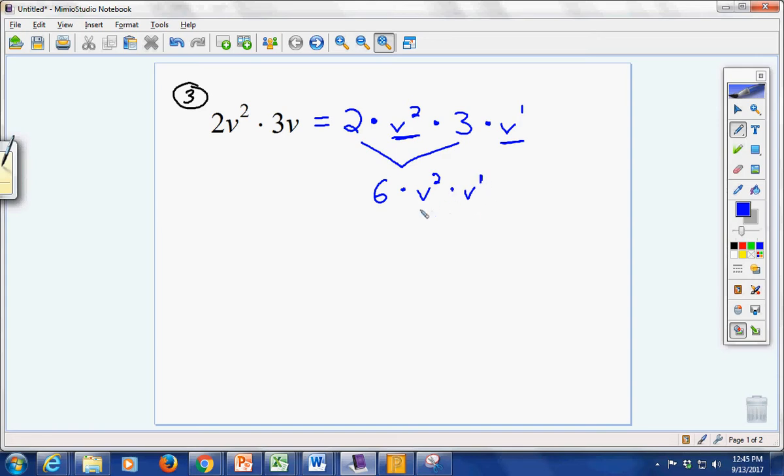Same base multiplying. That means we add the exponents. So this becomes 6 times v to the third. And I would accept either of these. In fact, we probably shouldn't even write the times sign. So I'd accept any 3 of these.